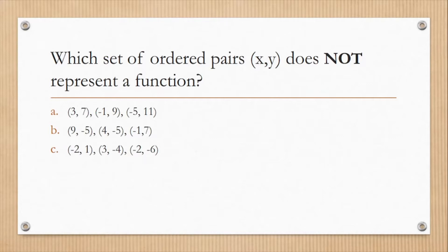Now let's consider this set of ordered pairs. The ordered pairs are something like the coordinates of a point in the Cartesian plane. The first number is for x and then the second term is the y. Which set of ordered pairs does not represent a function? You can pause the video to think about your answer.